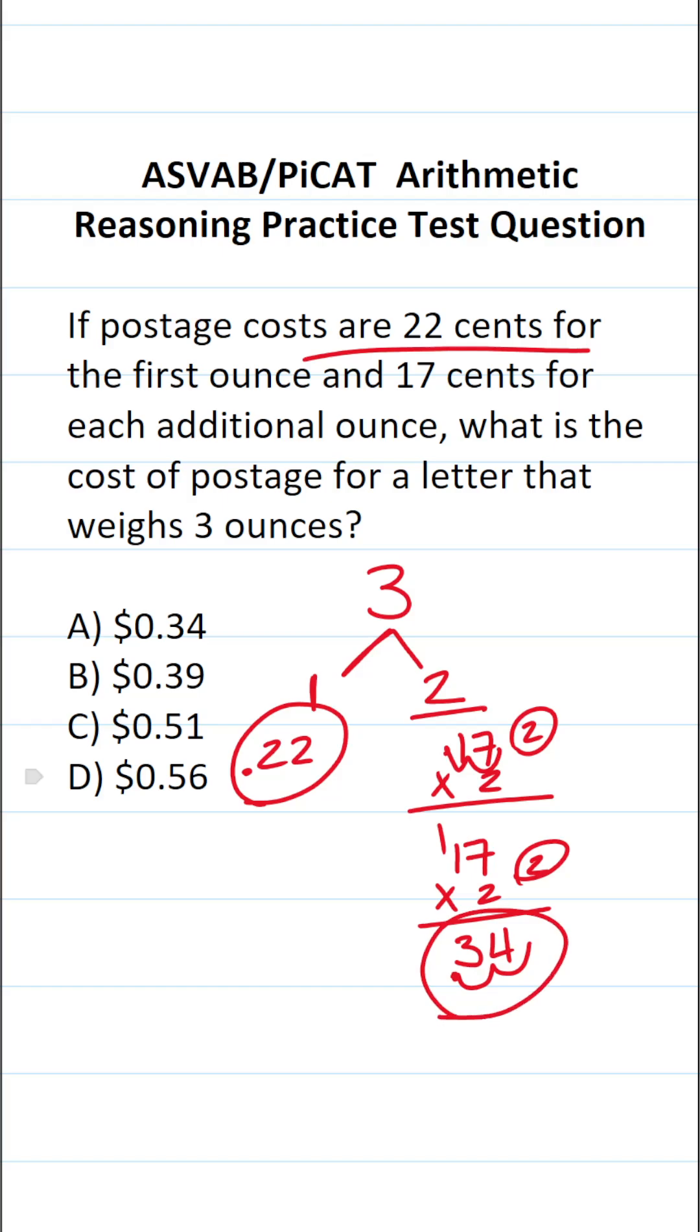How much are we paying for postage in total? That's going to be $0.22 plus $0.34. Let's go ahead and add this up very quickly. 2 plus 4 is 6. 2 plus 3 is 5.